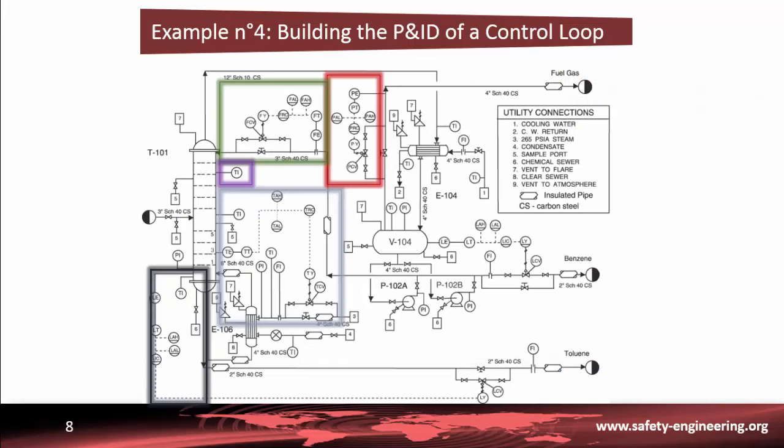The other control loops are structured in exactly the same way. You can see here a control loop for the pressure into the vessel. The measured variable is the pressure at the outlet of the drum and the manipulated variable is the outlet flow at the top of the drum. Both alarms are PAL and PAH.